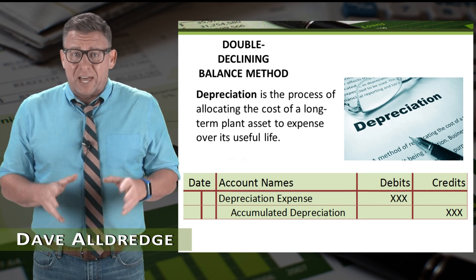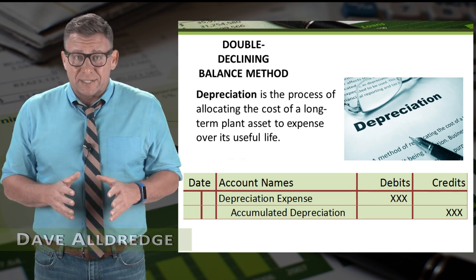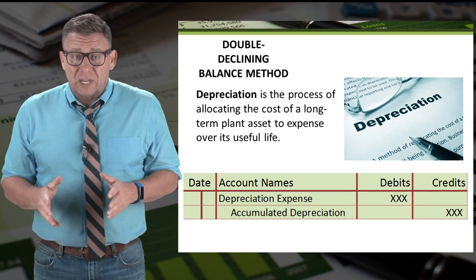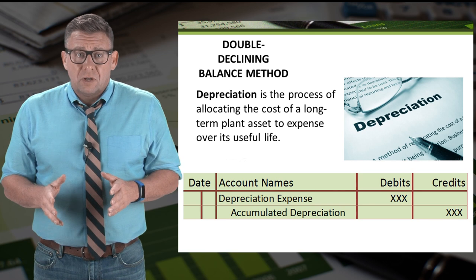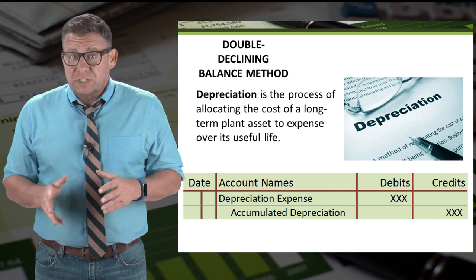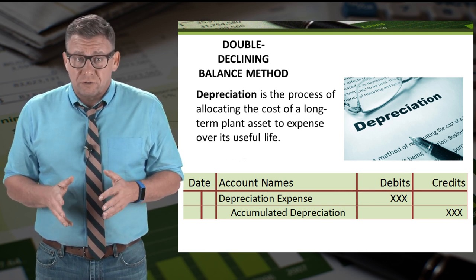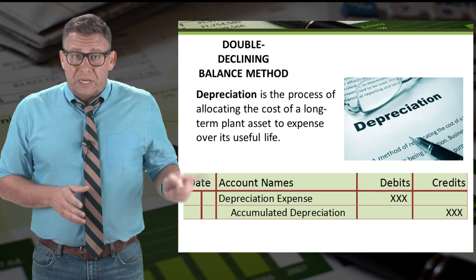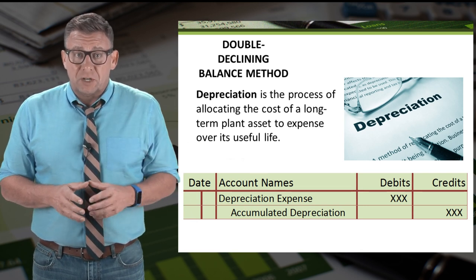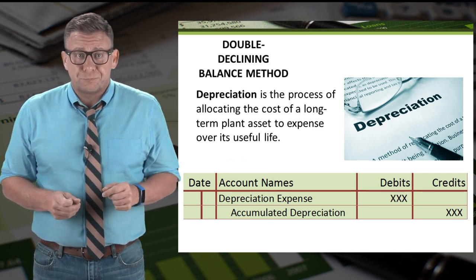Depreciation is the process of allocating the cost of a long-term plant asset to expense over its useful life. We allocate asset cost to expense with the following adjusting journal entry: we debit depreciation expense and we credit accumulated depreciation for the amount of expense.